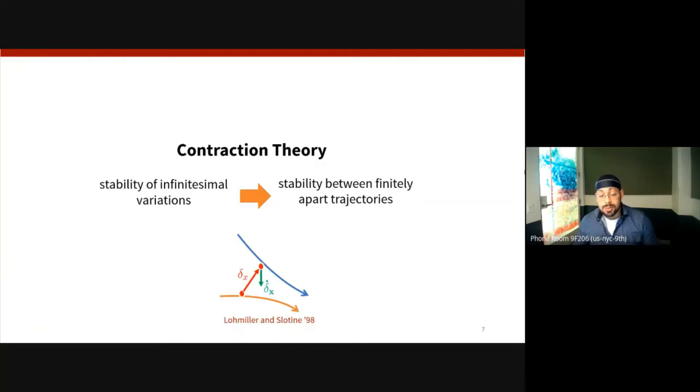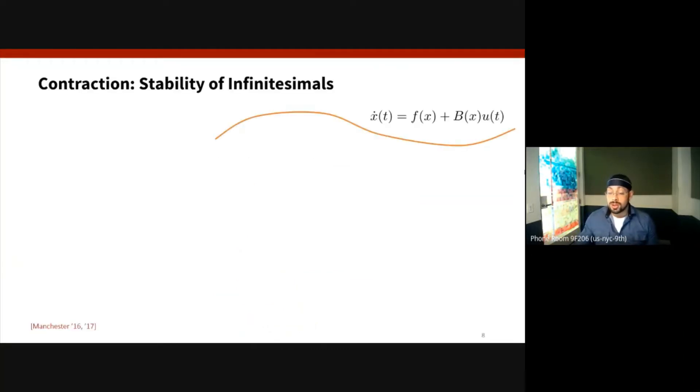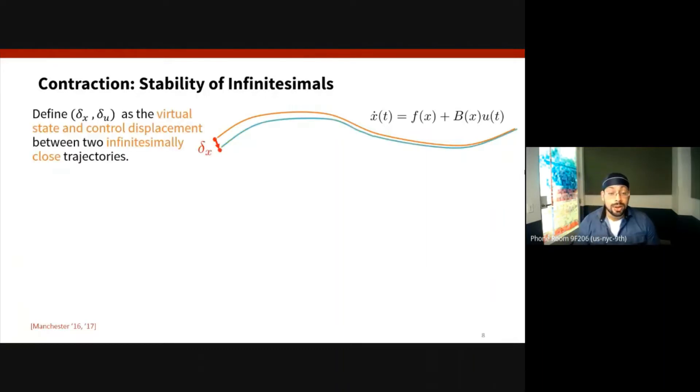And control contraction metrics essentially generalize this framework to the controlled setting. So let's say I give you a state and control trajectory that satisfies these nonlinear control-affine form. And then along this trajectory I can imagine the sequence of variations δx, δu, where you can think about these variations as state and control displacements with respect to infinitesimally close trajectories, or more formally, δx and δu are tangent vectors in the tangent space of our state and control manifolds.